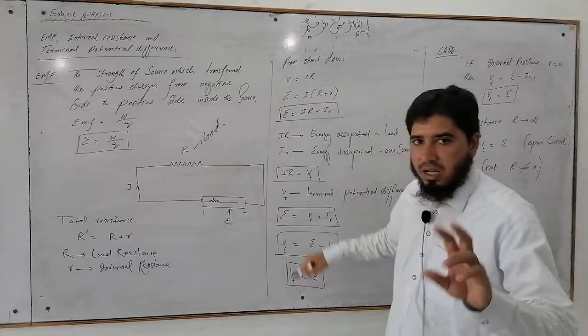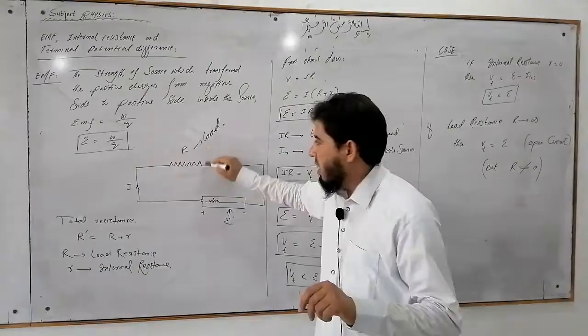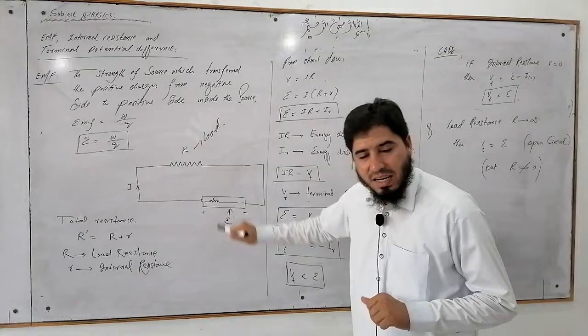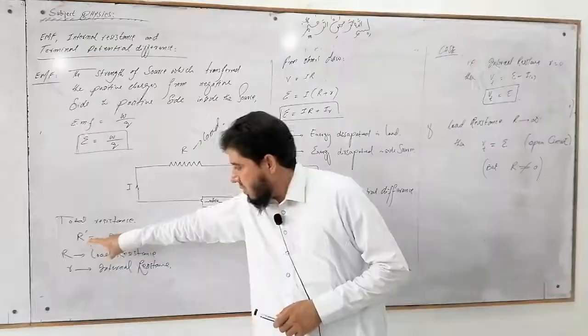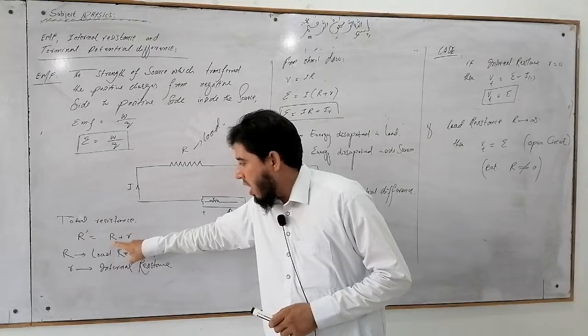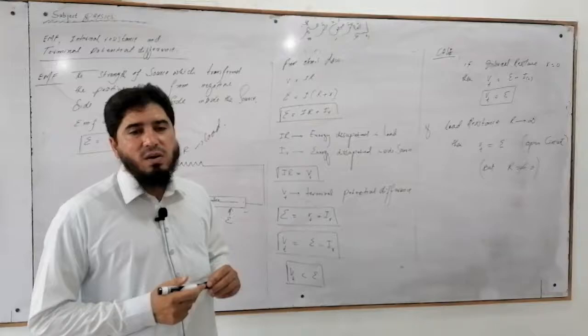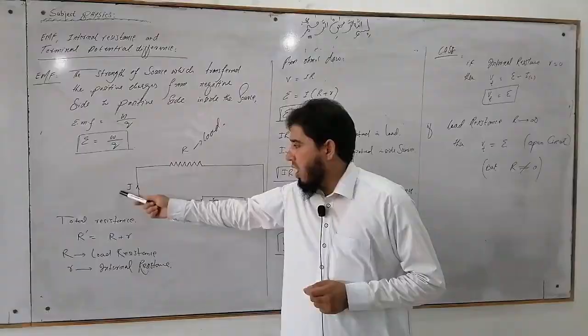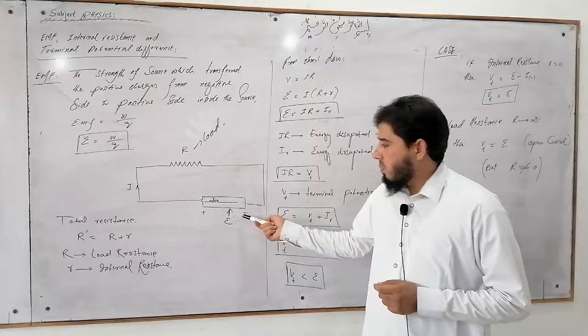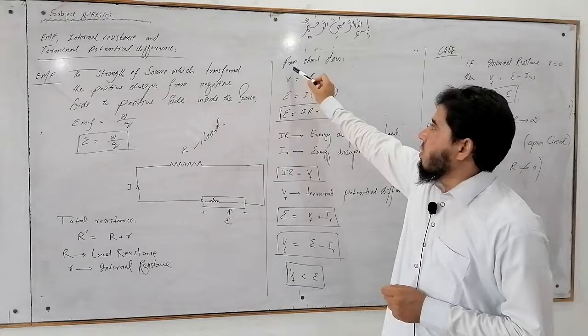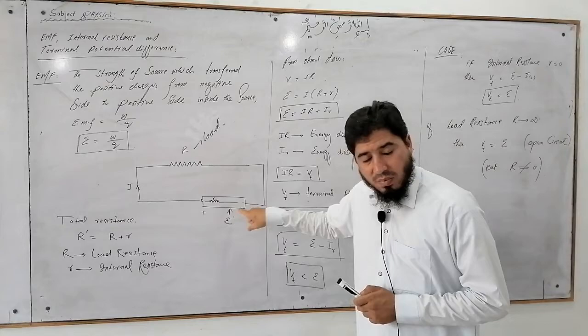Ab iska relation banane ke liye — ek hai bada, jaise load kehte hain; ek hai chhota, jaise internal kehte hain. To total resistance hamare paas hai: R equivalent is equal to R plus r. Ye capital R kya hai — load resistance hai, aur ye small r kya hai — internal resistance hai, jo intahai small hai. Students, aapko pata hoga Ohm's Law hamein kya batata hai — the magnitude of electric current in any conducting wire is directly proportional to the applied voltage. Mathematical expression uska Ohm's Law ka ye hai ki V is equal to IR.